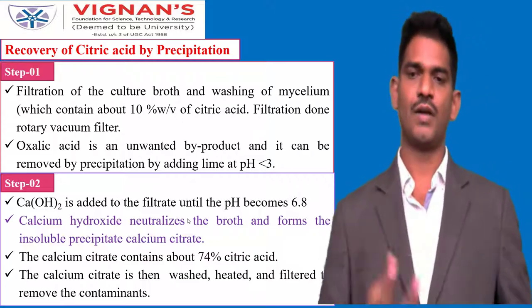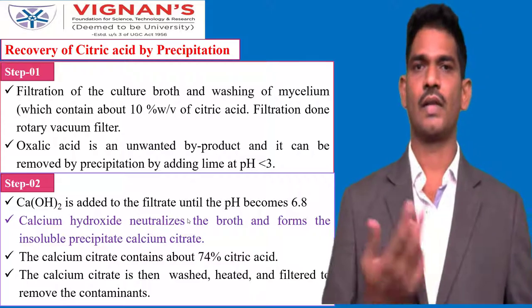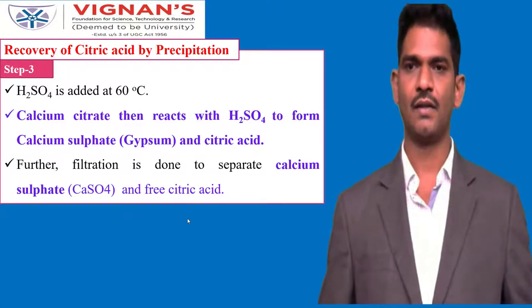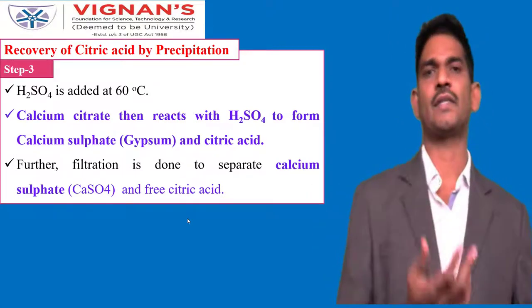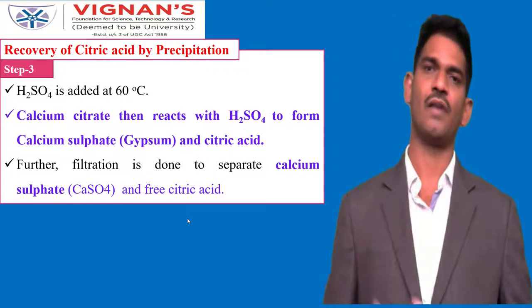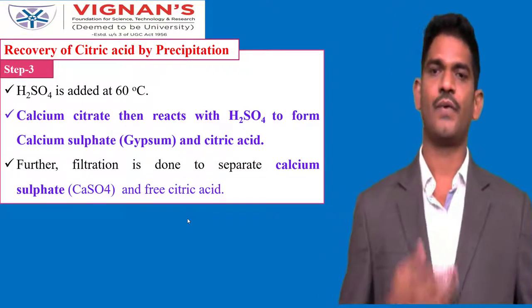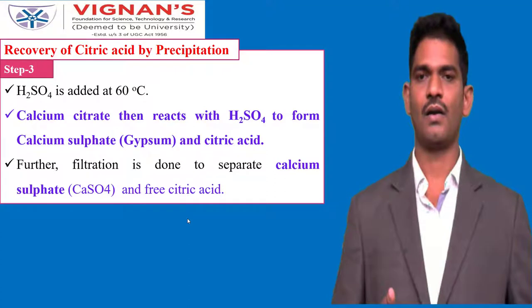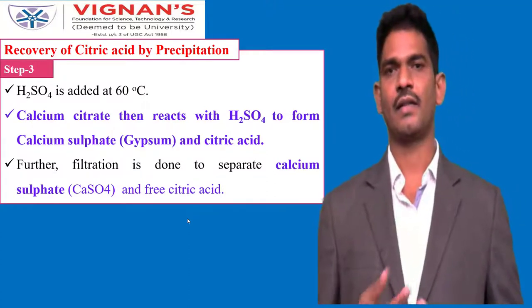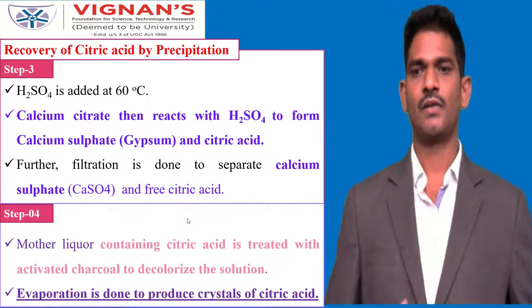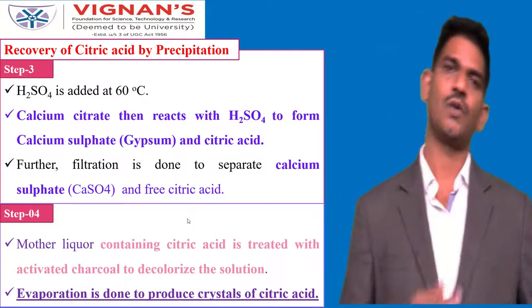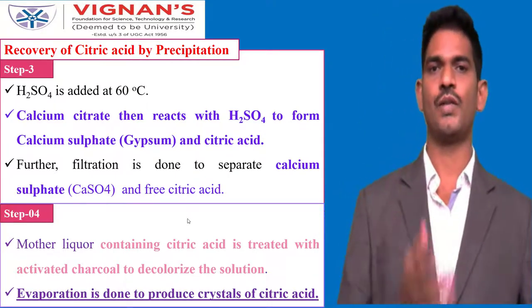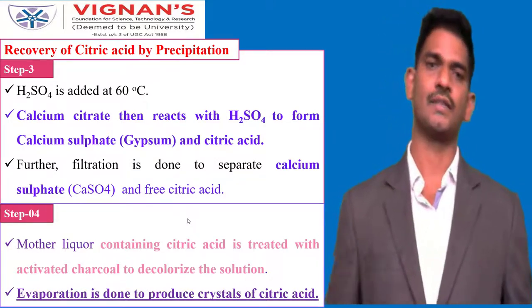The calcium citrate is washed and filtered to remove contaminants. H2SO4 is then added at 60 degrees Celsius, reacting with calcium citrate to form calcium sulfate (gypsum). Further microfiltration or ultrafiltration is done to separate calcium sulfate from free citric acid. The mother liquid containing citric acid is treated with activated charcoal to decolorize the solution, followed by evaporation and crystallization to produce crystals of citric acid.